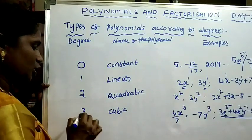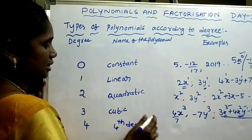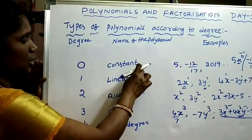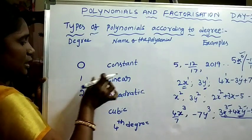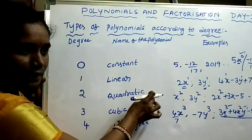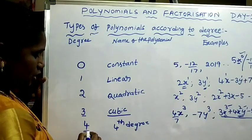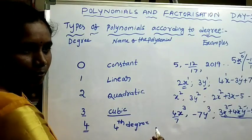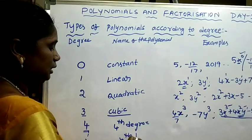If the degree of the polynomial is 4 or 5 or higher, it has no fixed special name — it is called a 4th degree polynomial or 5th degree polynomial accordingly. In general, if the degree of the polynomial is n, it is called an nth degree polynomial. So degrees 0, 1, 2, 3 have fixed names: constant, linear, quadratic, and cubic polynomials.